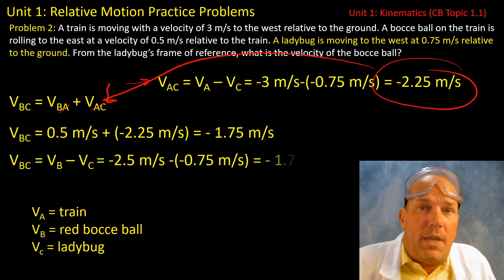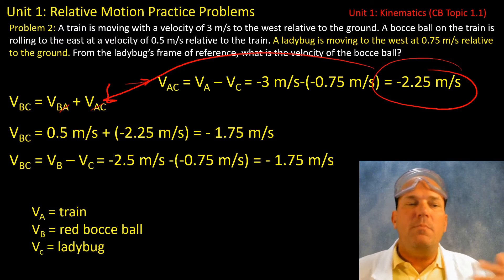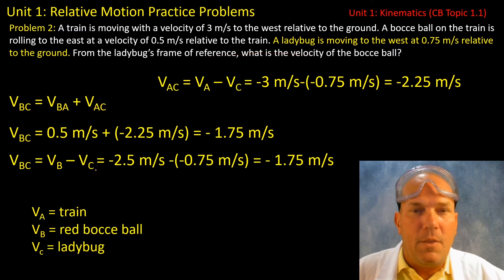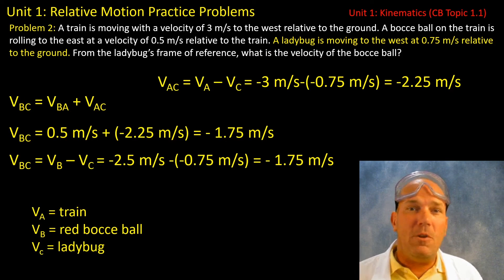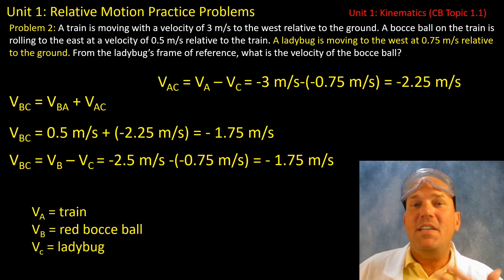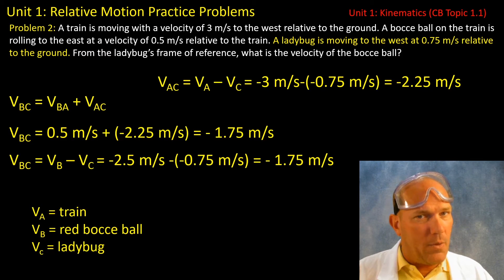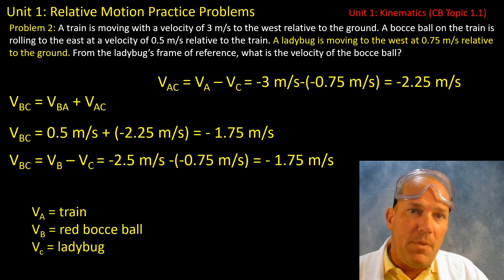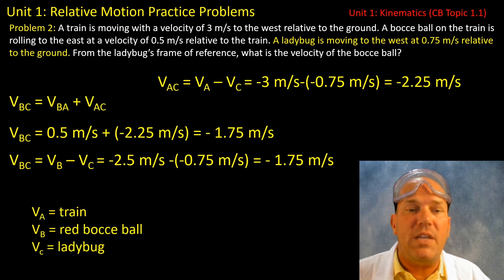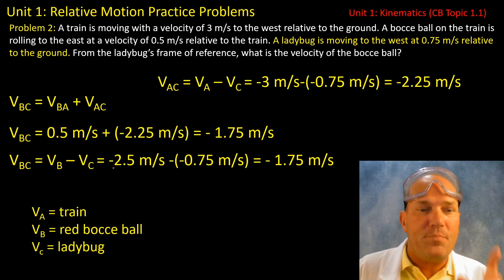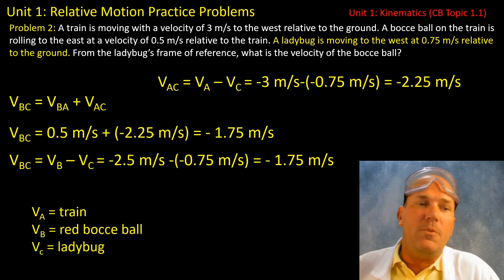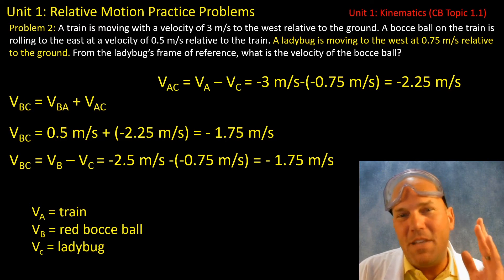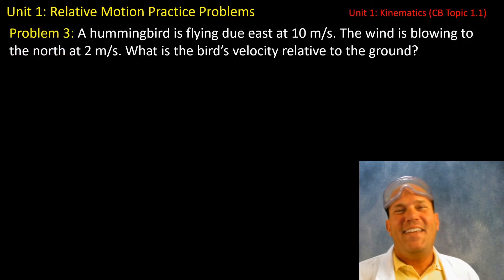Let me show you another way. The velocity of the bocce ball with reference to the ladybug's frame can also be found using the equation from the first video — you just need the velocity of the bocce ball relative to the ground. We found that in the first problem: 2.5 meters per second to the west. Subtract the velocity of the ladybug relative to the ground, and we get the exact same answer of negative 1.75 meters per second.